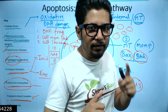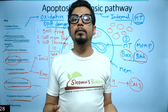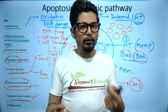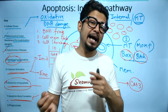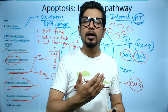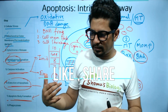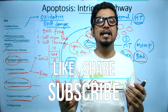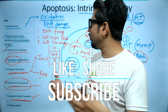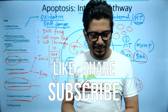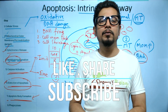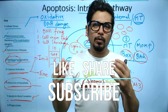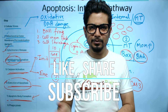That's all about the intrinsic pathway of apoptosis — involving mitochondria, formation of the apoptosome complex, the involvement of Apaf-1, and caspase-3 and the caspase cascade. If you like this video please hit the like button, share with your friends, and subscribe to the channel. In the next lecture we are going to talk about the extrinsic pathway of apoptosis in detail.